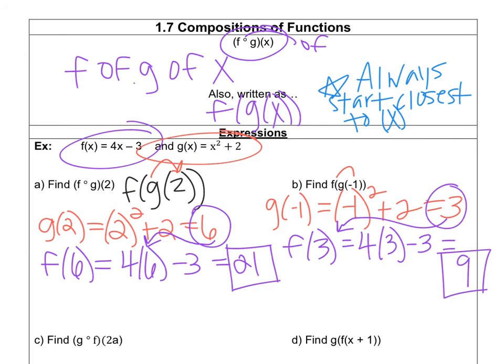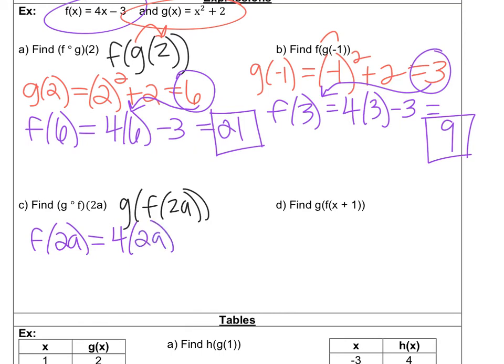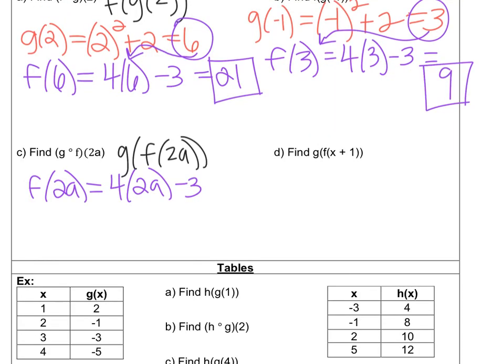Okay, now let's move on to these other examples. This time we're going to switch it up — G of F of 2A. So this time we're starting with the F equation first. I'm inputting 2A into the place of x in the F equation, so I'd have 4 times 2A minus 3. We can simplify this: 4 times 2A would be 8A, and then I have minus 3 on the end of it. So we're going to leave it as 8A minus 3 because I don't know what A equals. But I can't stop there — I need to plug that into the G equation now.